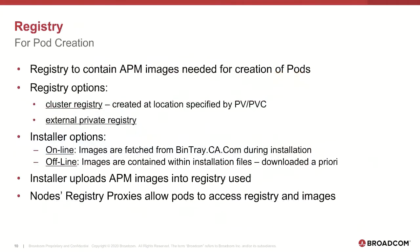APM images are always copied to the cluster registry and will be used for pod creation even when you use a private registry. Online installation fetches APM images during installation; offline installation utilizes images in the downloaded file. The installed registry proxies ensure that all nodes can access the cluster registry for pod creation.